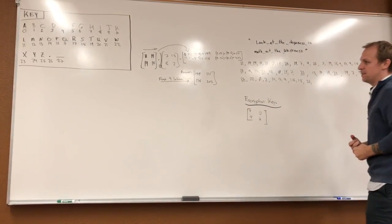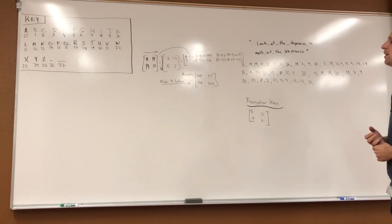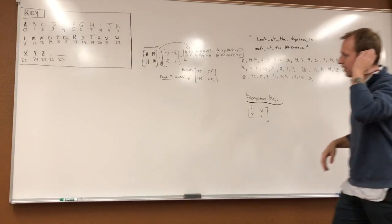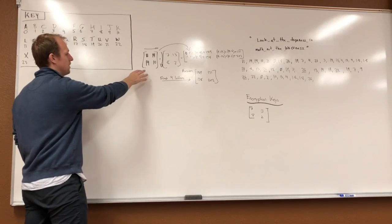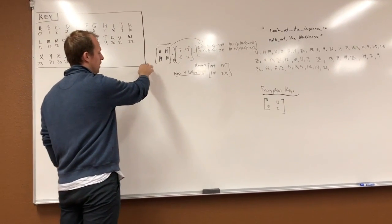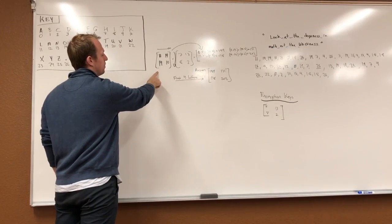Once we get our message put into the numerical form, we take the first four letters. This is the most basic way to do it. Take the first four letters or numbers and put them into a 2x2 matrix.